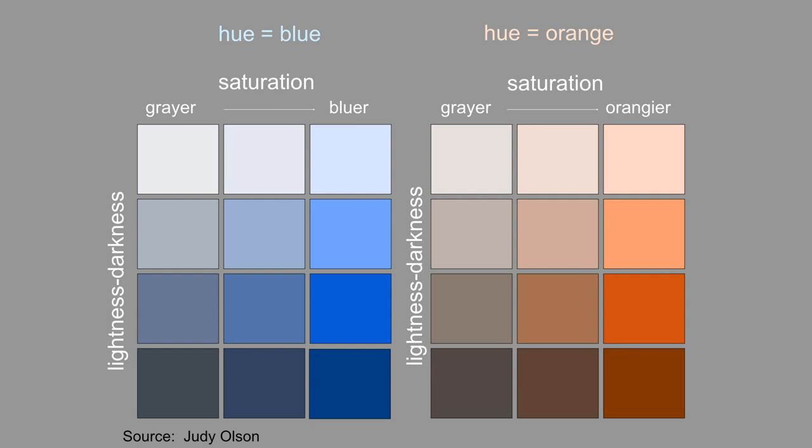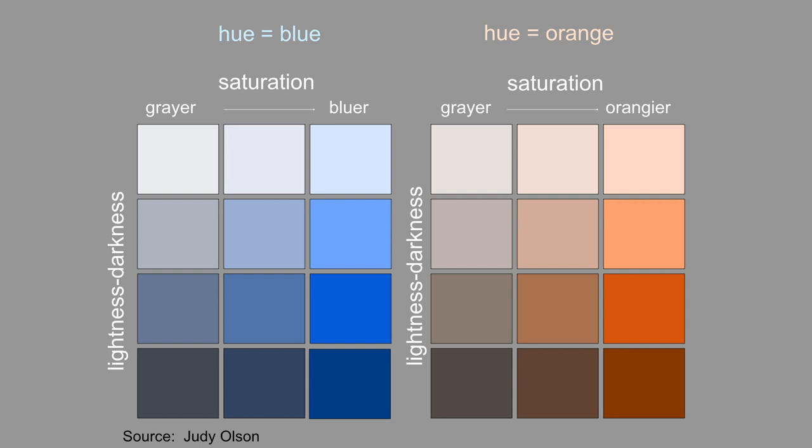The next few slides I'll be talking about color. There are three properties of color that define it: hue, saturation, and lightness. Hue is what we mean when we ask a two-year-old, what color is this? In the left of this chart, the hue is blue. In the right, the hue is orange.